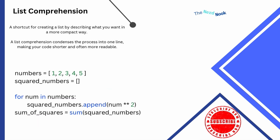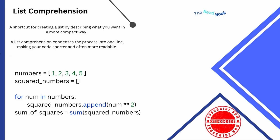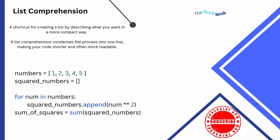A list comprehension is really just a shortcut for creating a list by describing what you want in a more compact way. A list comprehension condenses the process into one line. So I have my original list, I have a list of squared numbers — how could I essentially take all of this and smush it together into a single line of code? Well, that's what we want to do here. This is a comprehension.